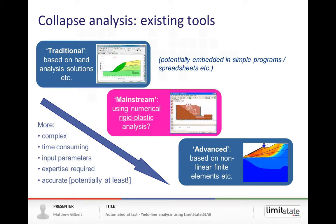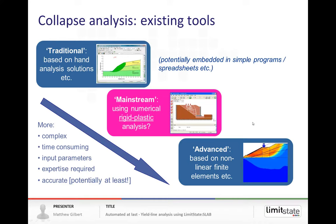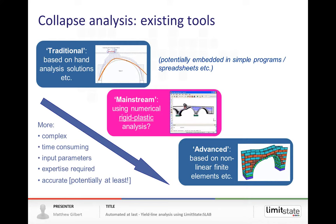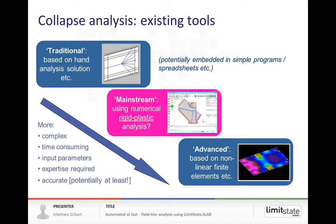In the geotechnical scenario we fill that gap with Limit State Geo, for masonry arch bridges with Limit State Ring, and now with the new launch of Limit State Slab, we're able to fill that gap with an automated yield line analysis tool. Key benefits of ultimate analysis compared with elastic methods are more economical solutions in design scenarios, and the ability to find hidden reserves of strength in assessment scenarios.